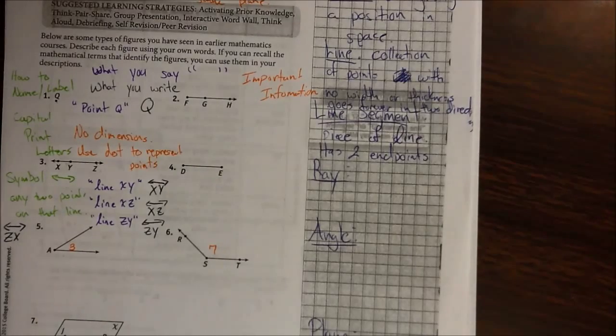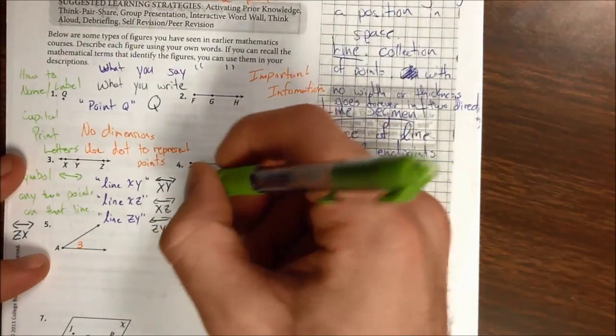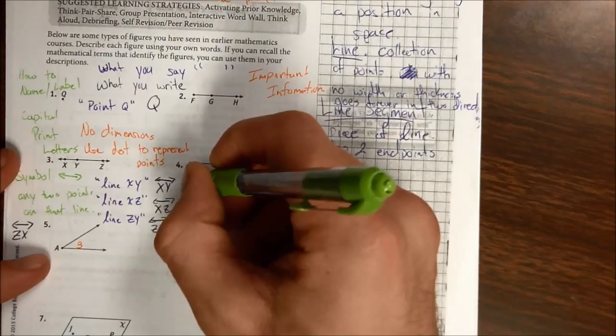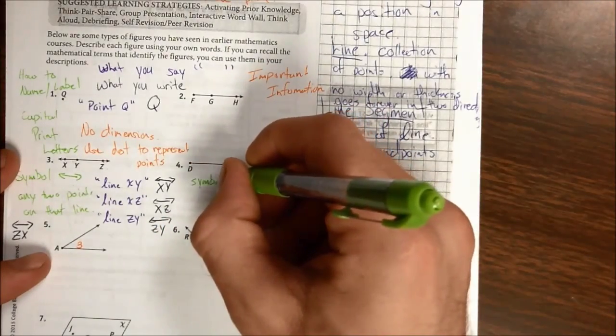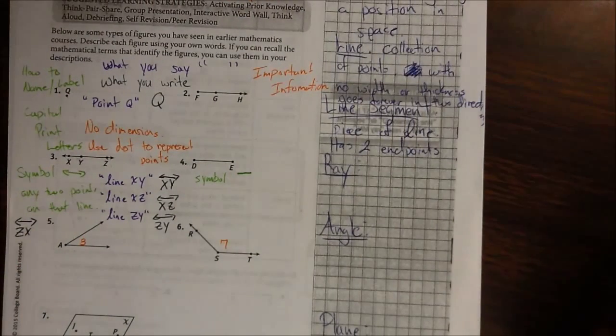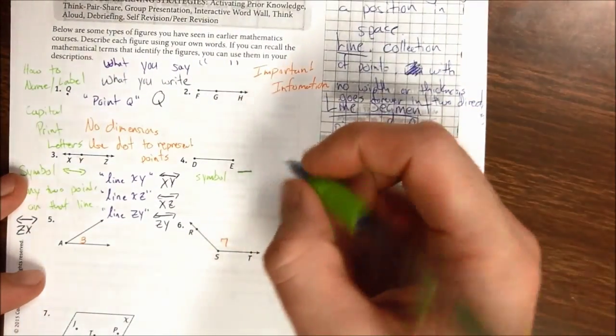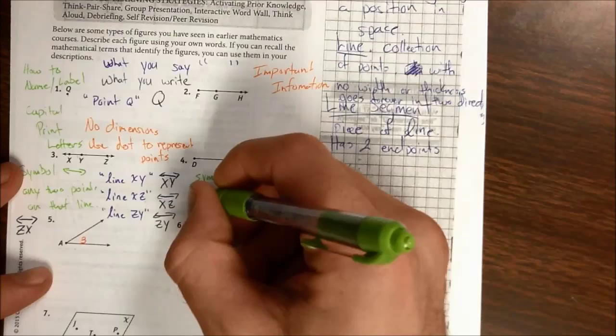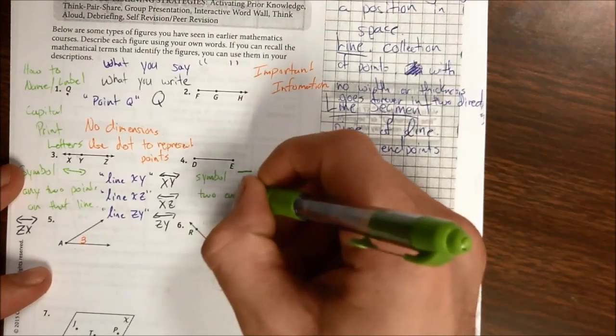Now, how do we name these? Well, there's a symbol for segments. The symbol for line segments is just a simple bar or a line. There's no arrowheads.